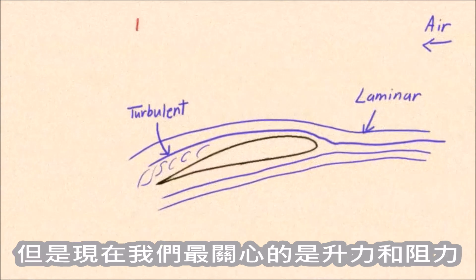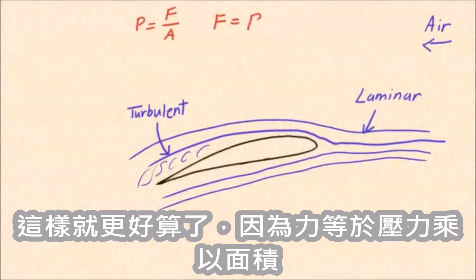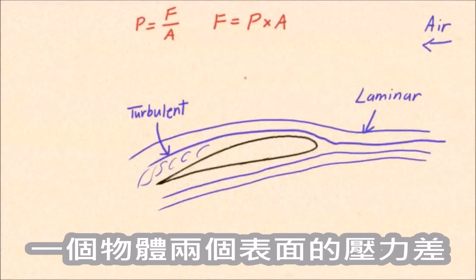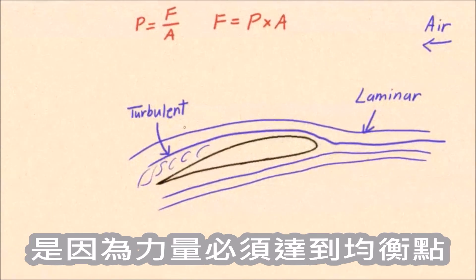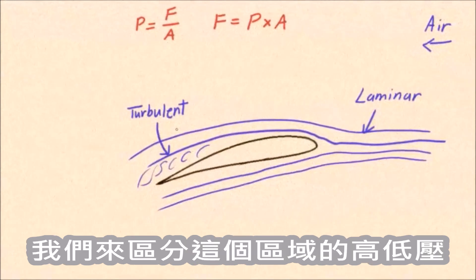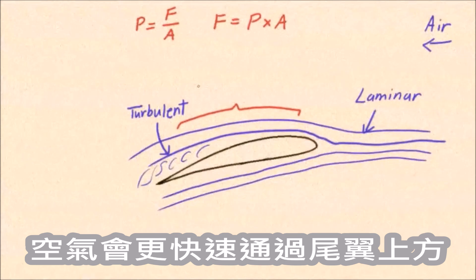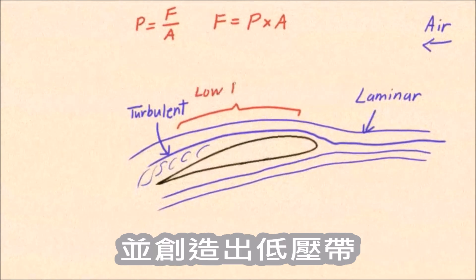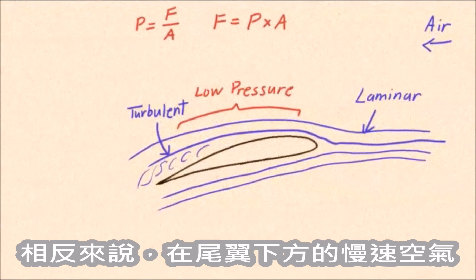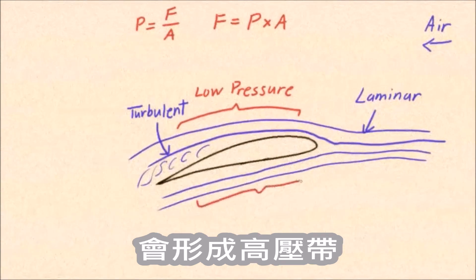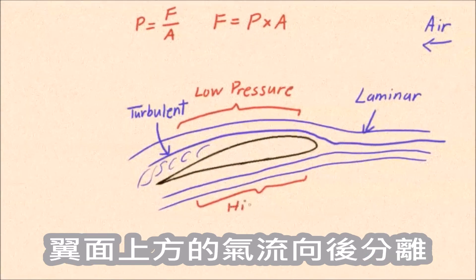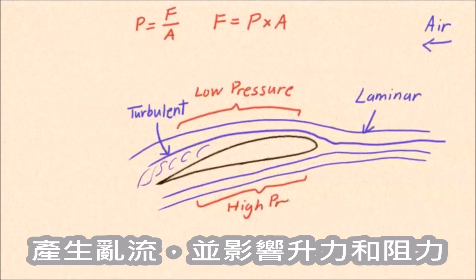Pressure is defined as force divided by area. However, since we are most concerned about the forces of lift and drag, it's easier to write the equation as: force equals pressure times area. Pressure differences between two surfaces of an object create a force going from high to low pressure because the pressures want to equalize. The air travels faster above the wing, creating an area of low pressure. Conversely, slower air on the bottom of the wing creates a high pressure area. The airflow above the airfoil separates toward the back and creates turbulence, impacting lift and drag.